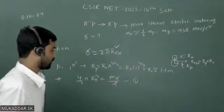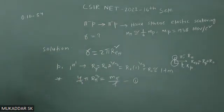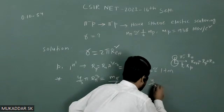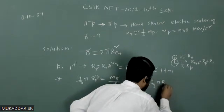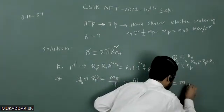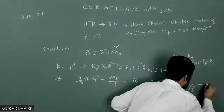And similarly, you can calculate or you can write the same formula for proton. So if I write it (4/3)πrₚ³, that should be equal to the mass of proton divided by density. And let us take this is equation number 2.